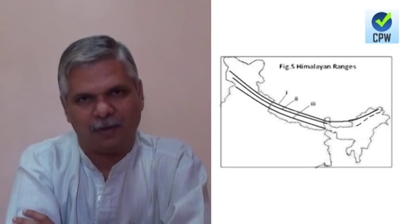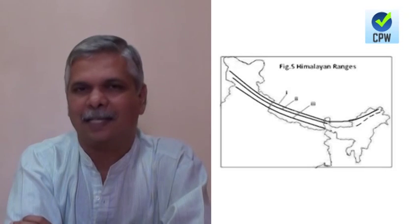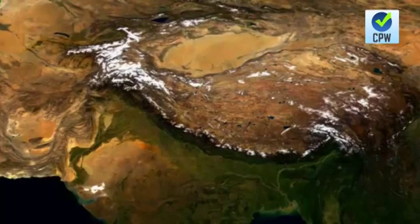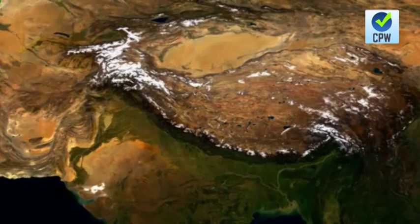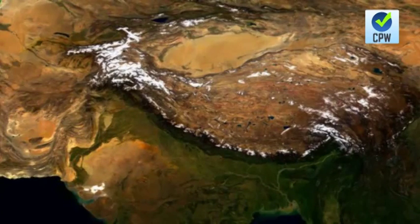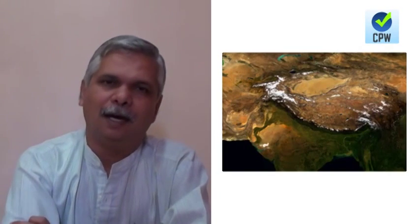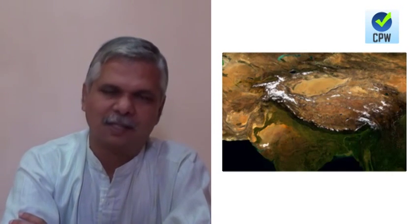The Himalayan mountain system is one of the loftiest and most recent mountain systems of the world. It is also the largest continuous chain of mountains, extending into China, Pakistan-occupied Kashmir with the Karakoram system, and into Afghanistan and Pakistan border areas with the Hindu Kush system. On the eastern side, it continues as the Arakan Yoma in Myanmar. As a system, it includes more than 14 peaks above 8,000 meters.